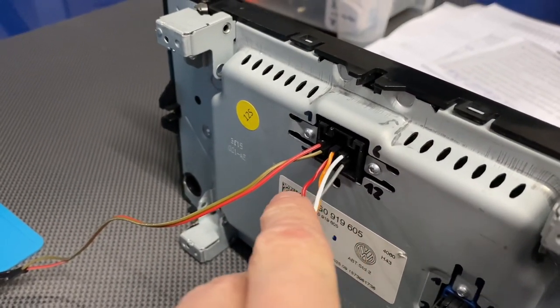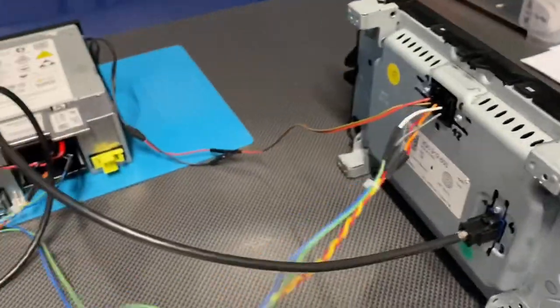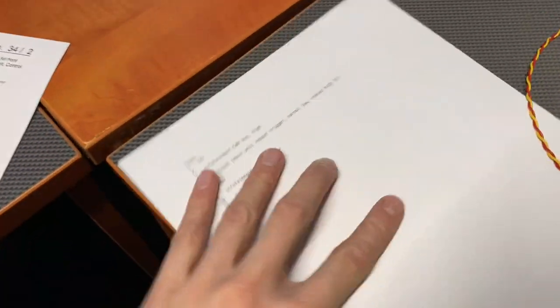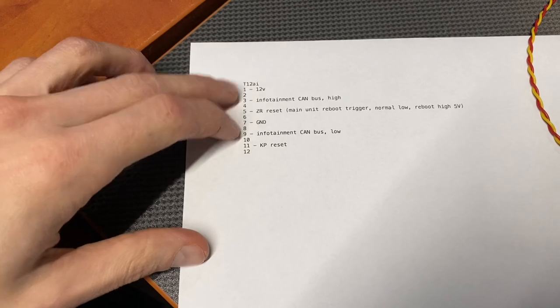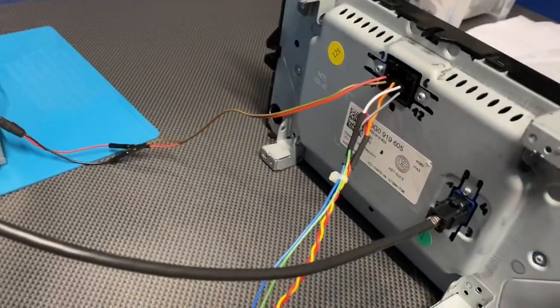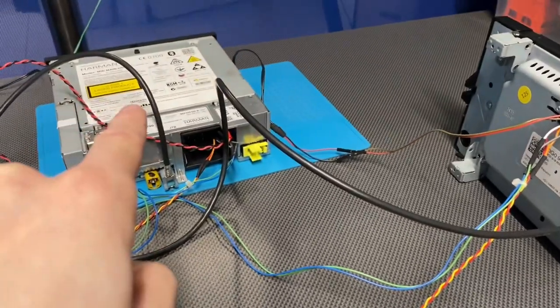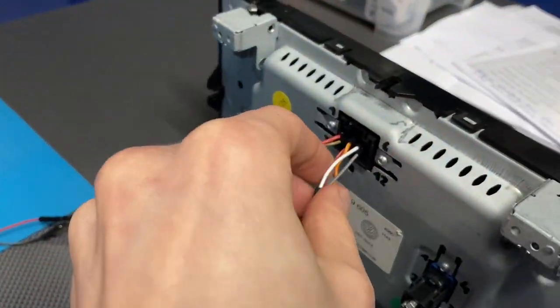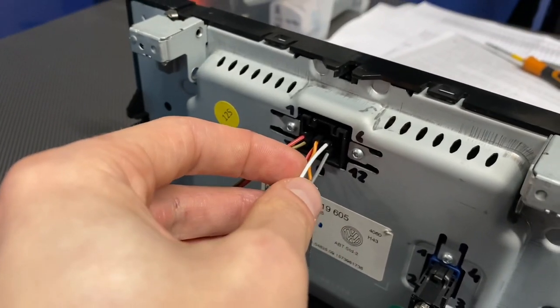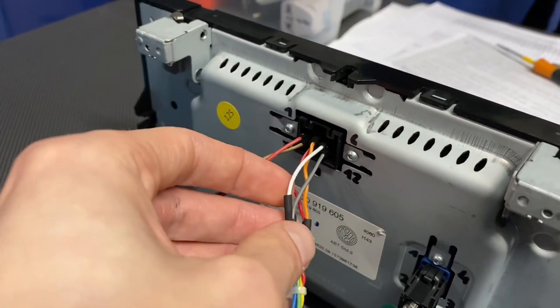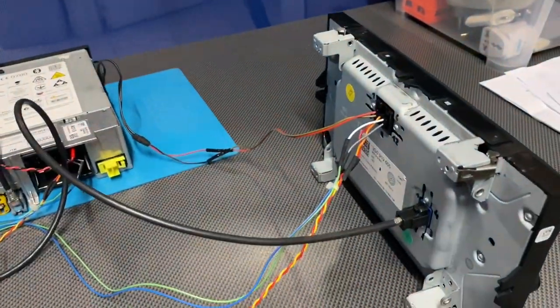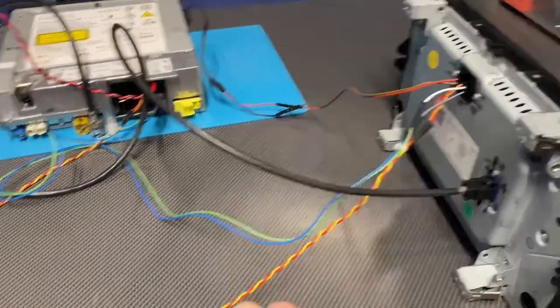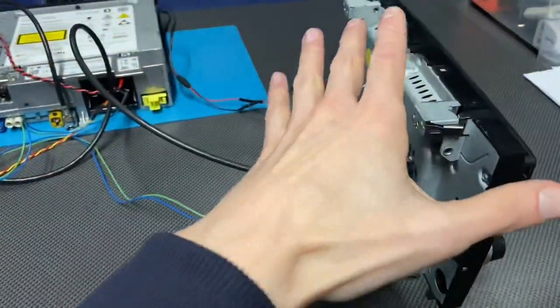Over here, number three and number nine, I believe, if I'm correct, let me just check. Yeah, number three and number nine are CAN bus cables, high and low signal for communication with the unit, and those are connected to the quad lock. And over here, numbers 5 and 11 are also connected to the unit, those are reset signals. Okay, so this is pretty simple.